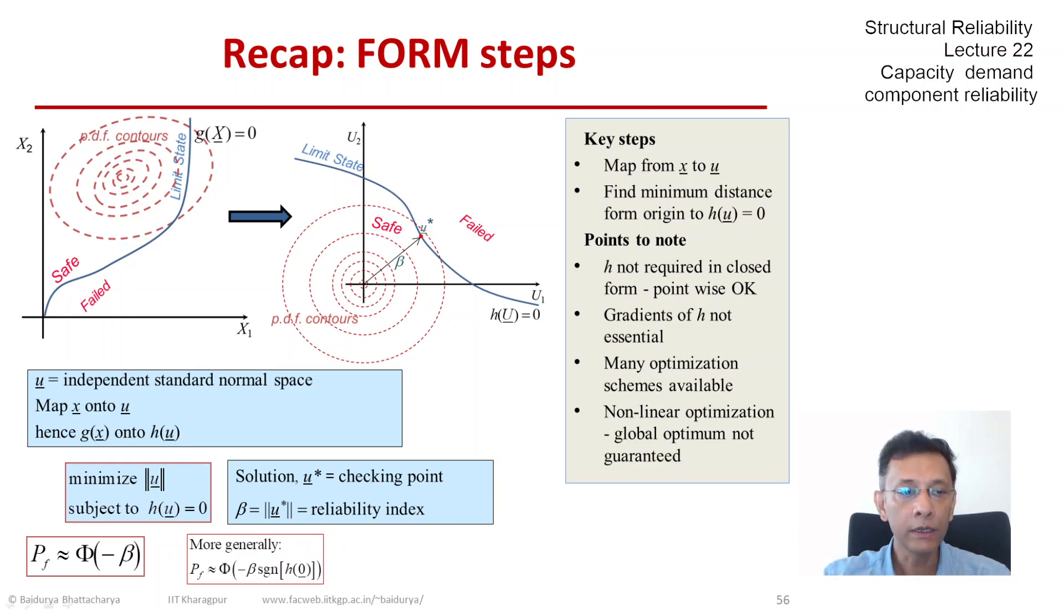But importantly, this is a nonlinear optimization problem. So there is no guarantee that the global optimum is obtained. We can always find a local optimum. And only if it's a convex optimization problem, we can be assured that the local optimum is the global optimum.